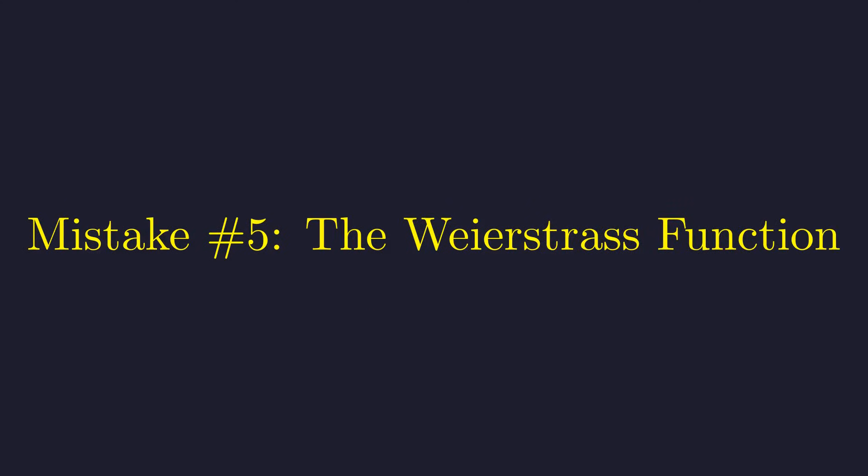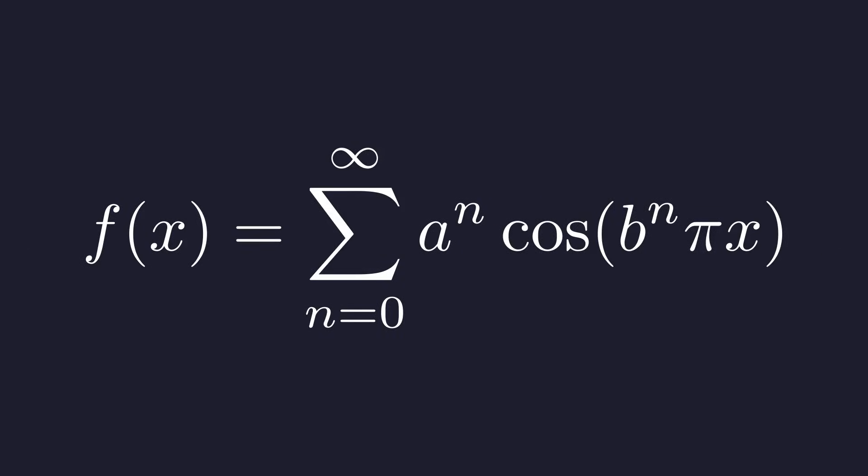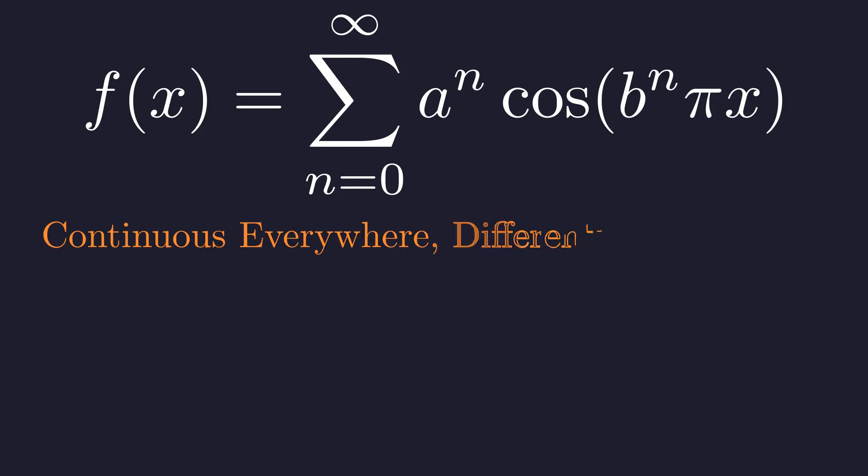Intuition suggests that if a function is continuous it must be smooth somewhere. In 1872, Carl Weierstrass proved this intuition wrong. He constructed a function, an infinite sum of cosine waves, with a shocking property.